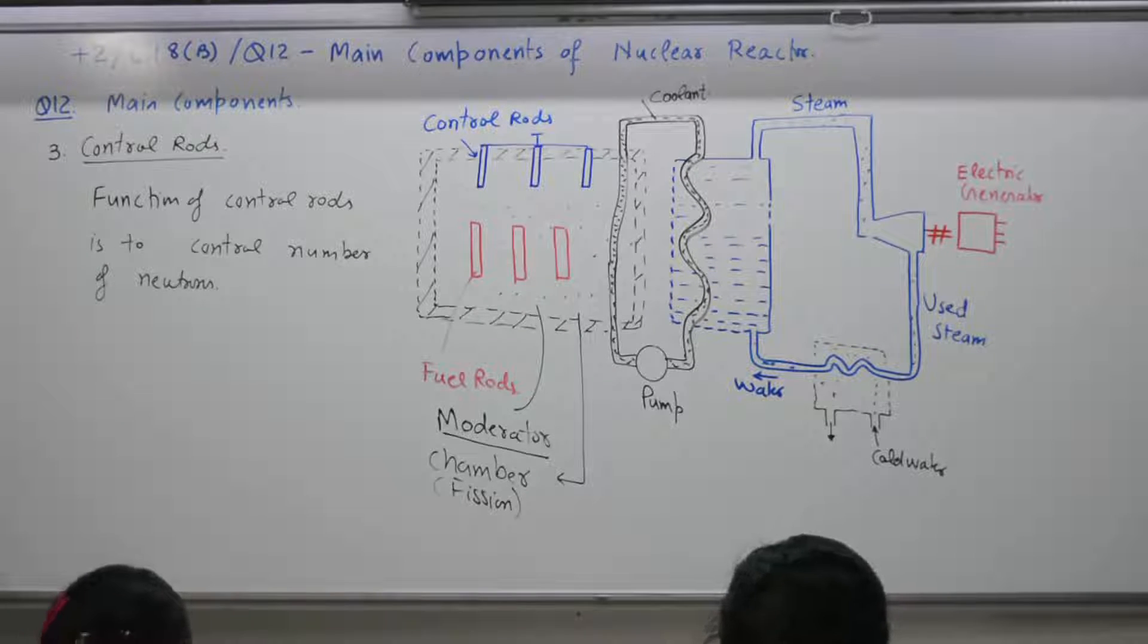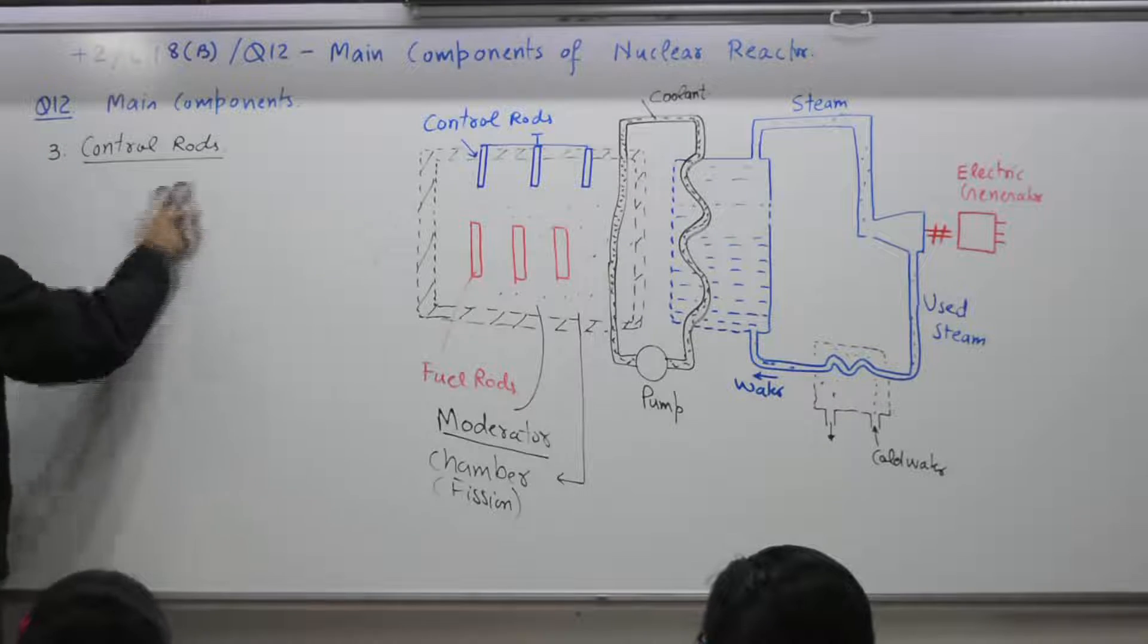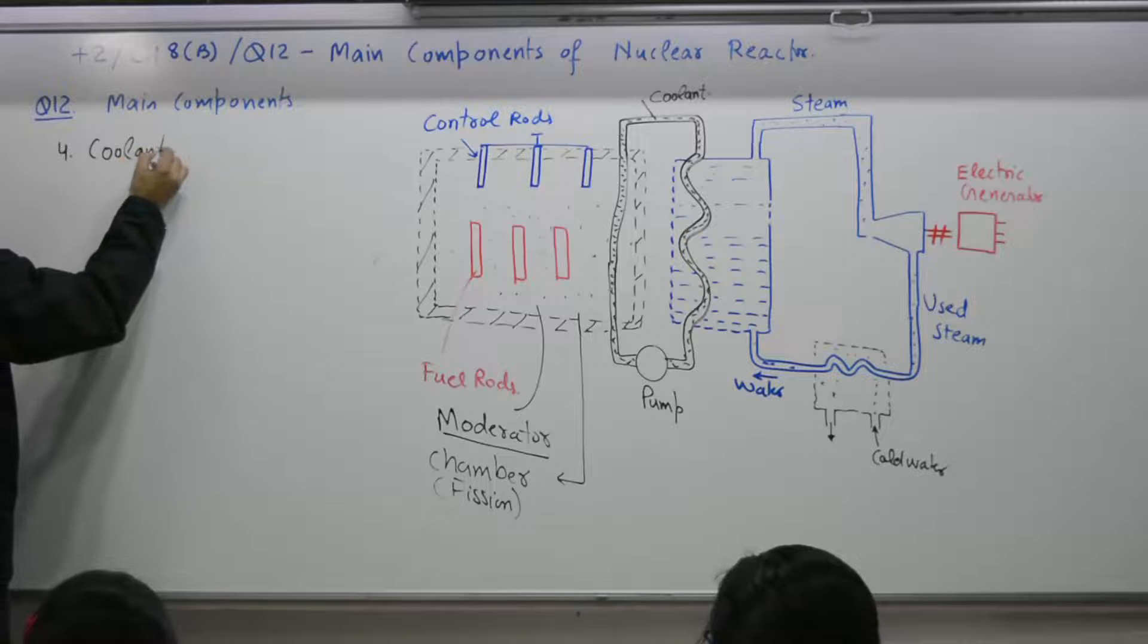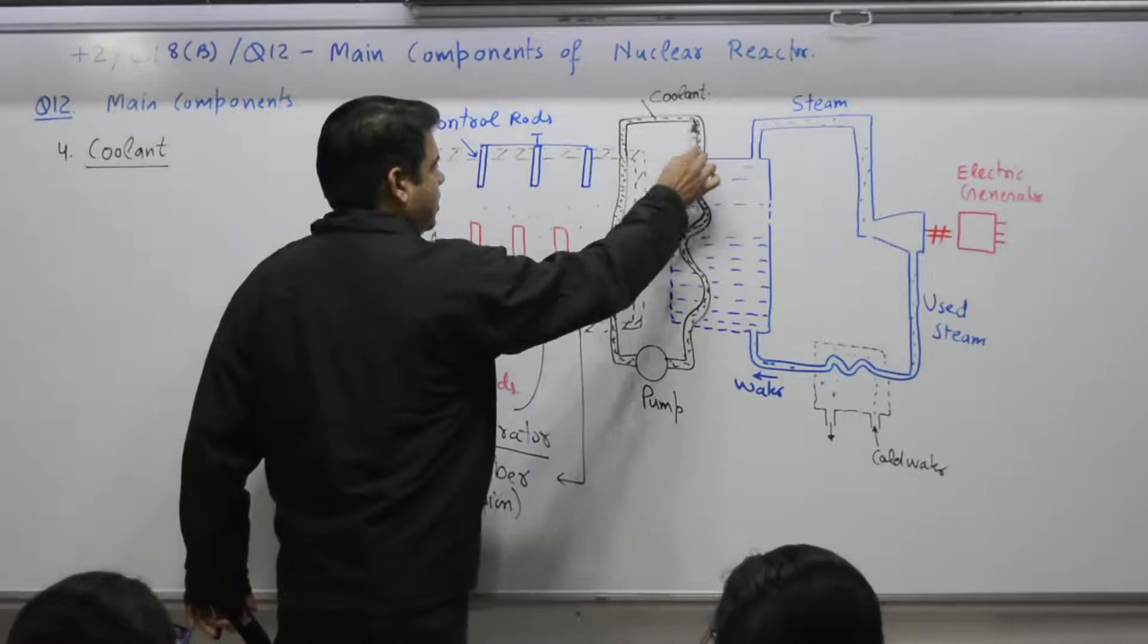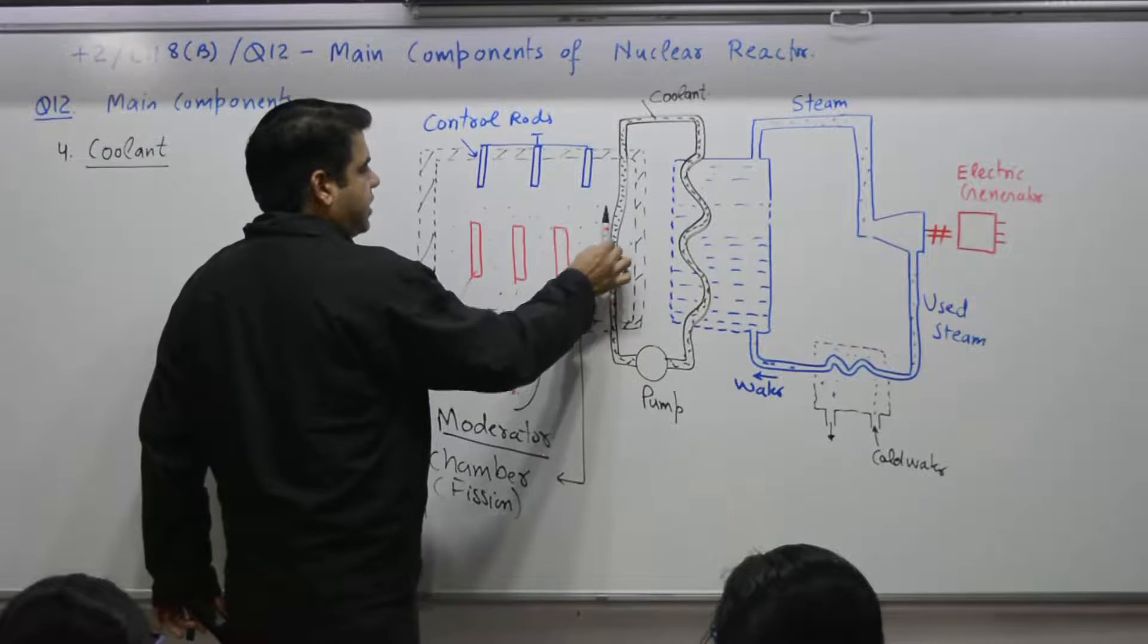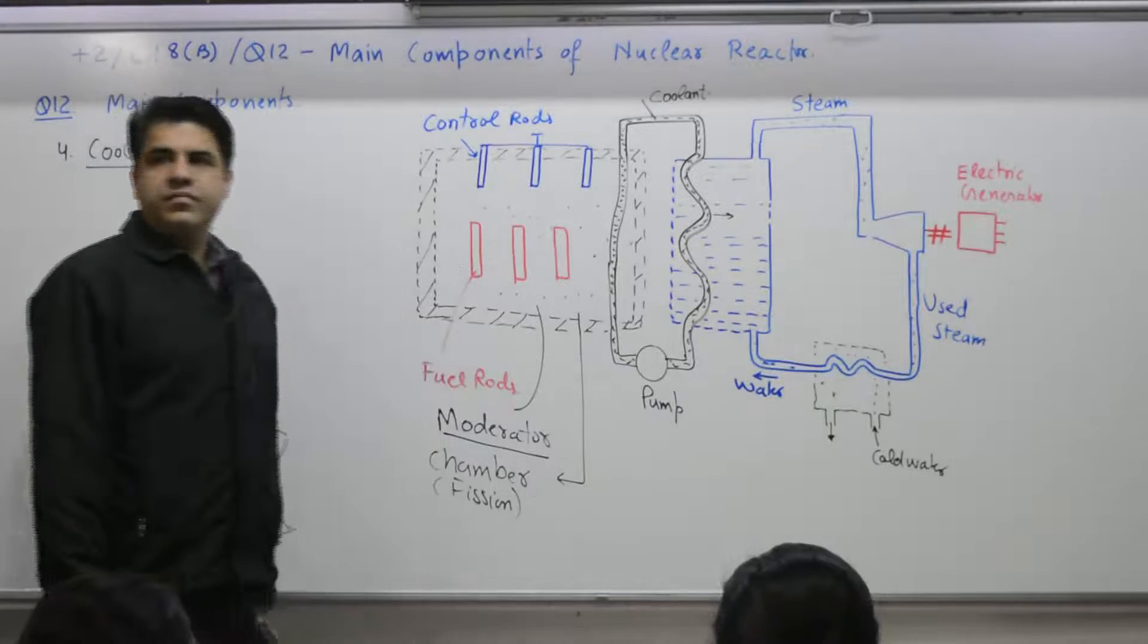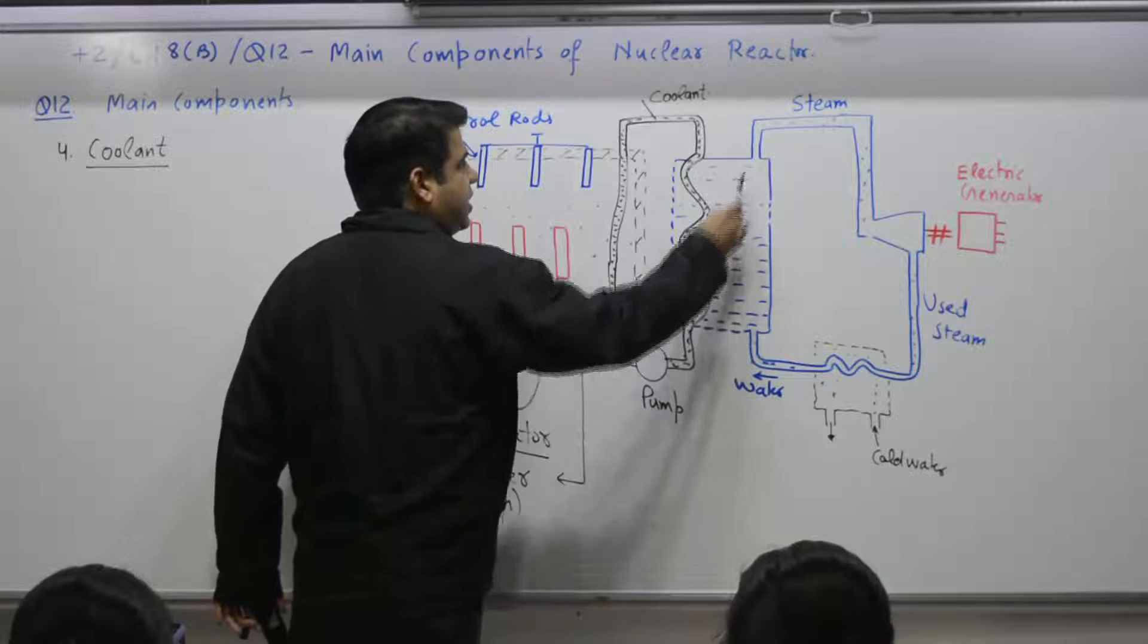One minute to note. Next is what? Fourth. Yes. Coolant. This is the circuit for coolant. This coolant will absorb heat from the reactor, will move and now will release heat in this steam chamber. Here, water is converted in. Inlet is what? Water. Output is what?